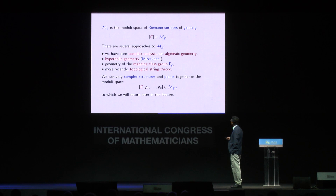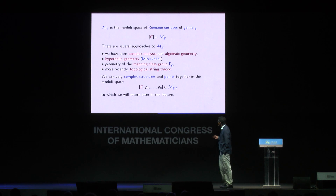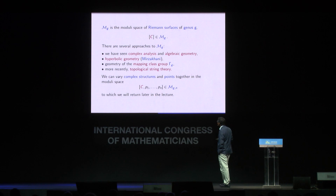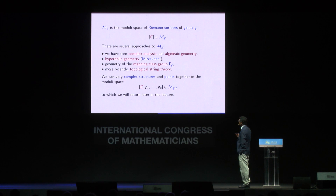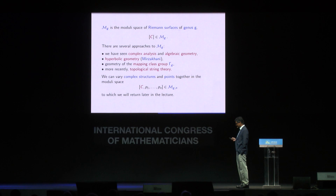This is the first time we've seen actual varying moduli of curves. Following the notation of the genus 0 case, M_g is the moduli space of Riemann surfaces — the moduli space of complex structures up to biholomorphism. There are several approaches to the moduli of curves: complex analysis, algebraic geometry, hyperbolic geometry (touched on in Donaldson's talk, see also Mirzakhani's works), the mapping class group, and topological string theory. We can also vary both the complex structure and marked points together, giving the moduli space M_{g,n}.